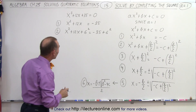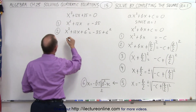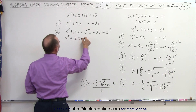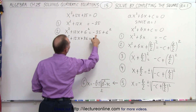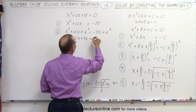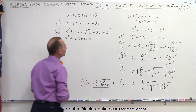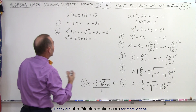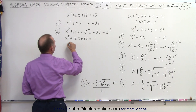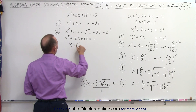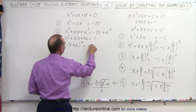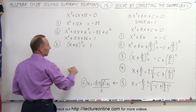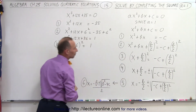We can rewrite this as x squared plus 12x plus 36 equals negative 35 plus 36, which equals 1. Now we notice the left side is a perfect square, so we can factor it. Step 3: the left side factors as x plus 6, quantity squared, equals 1.